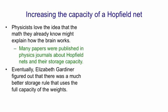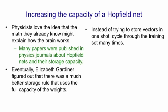Eventually a very smart student called Elizabeth Gardner figured out that there was actually a much better storage rule if you were concerned about capacity, and that it would use the full capacity of the weights. Instead of trying to store vectors in one go, we're going to cycle through the training set many times. So we lose the nice online property that you only have to go through the data once, but in return we're going to gain more efficient storage.